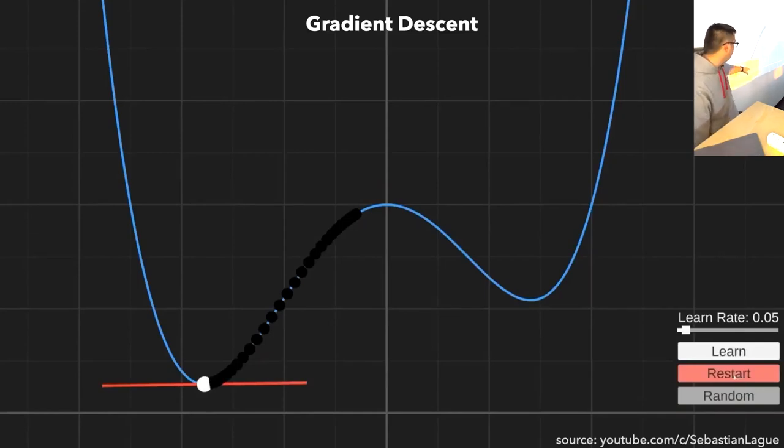And we can also dictate how big these jumps are by tweaking the learn rate, which is just a multiplication in the function. So now we are able to tell it how to reach this minimum point.